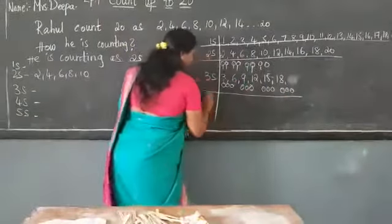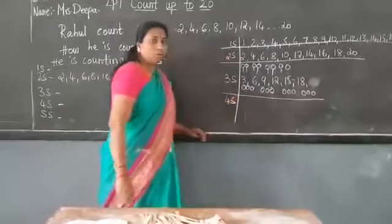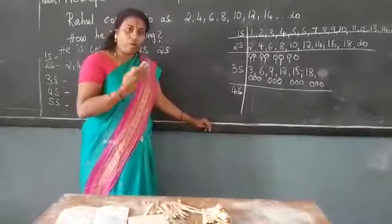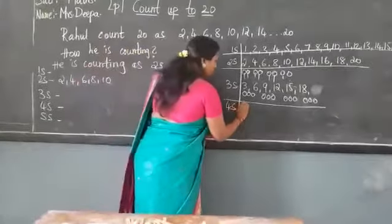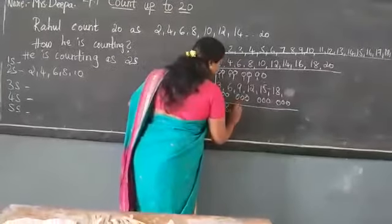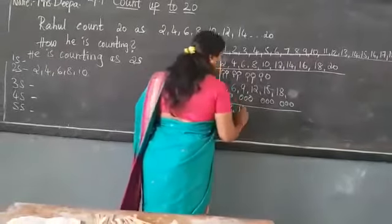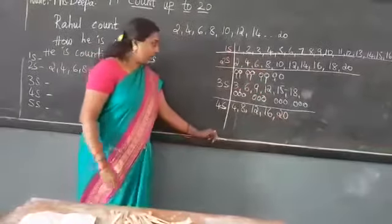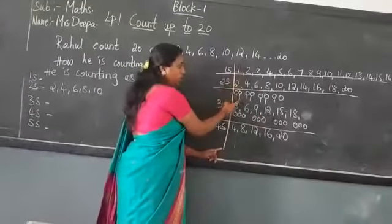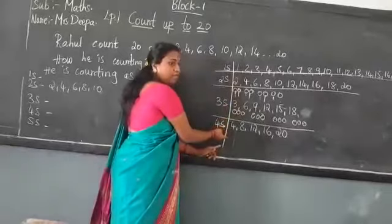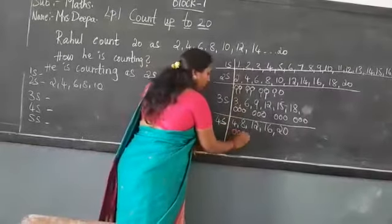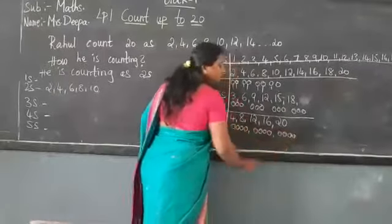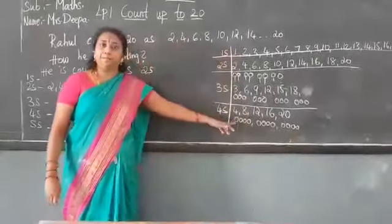Now we go for 4s. Same thing as 1, 2, 3. We will go for 4. 4, 8, 12, 16. Right. Same thing as we done in 1, 2, 3. Again the same thing we have in 4. Again taking 4 pictures. 4 pictures. Same thing we can do till 4.